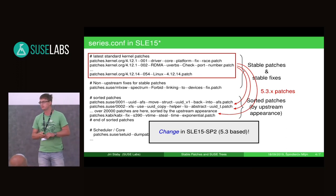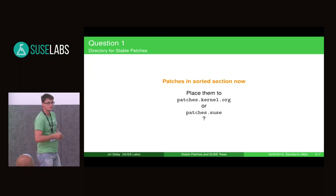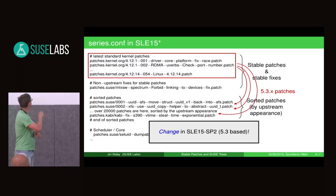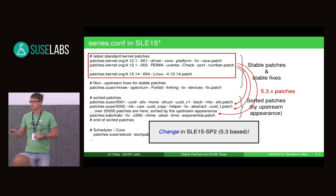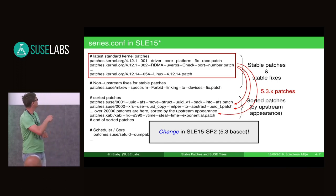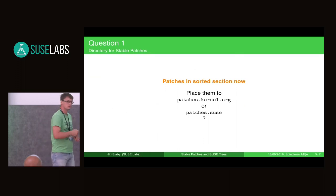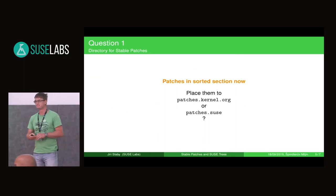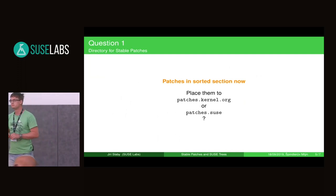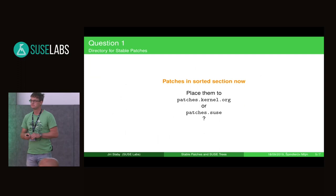There are some problems connected with that which I would like to discuss here so that we can decide what to do. The first problem — or it's rather a question. We used to place these stable patches into the patches.kernel.org directory, and the rest was in patches.suse, etc. Now, when we move these patches to the sorted section, should we still use patches.kernel.org or patches.suse? Any opinions? I think we should still use the separation, because this way you know which patches are backports — stable backports — and which are not.